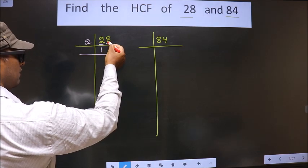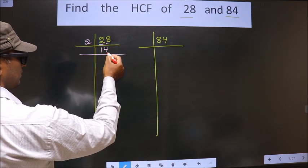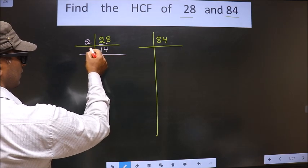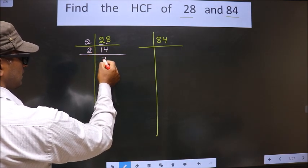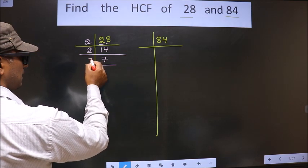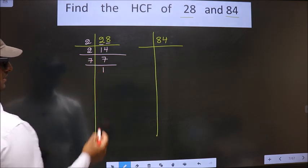Next number is 8. When do we get 8 in 2 table? 2 times 4 is 8. Now here we have 14. 14 is nothing but 2 times 7 is 14. Now 7 is a prime number, so we take 7 times 1 is 7.